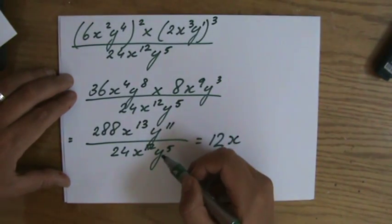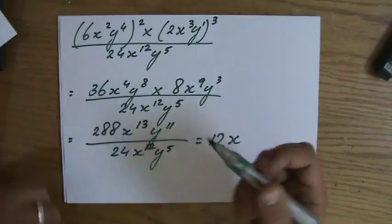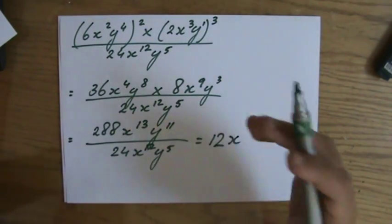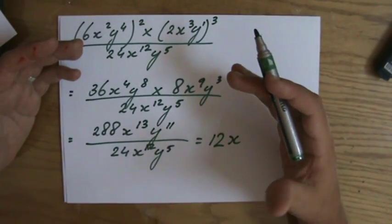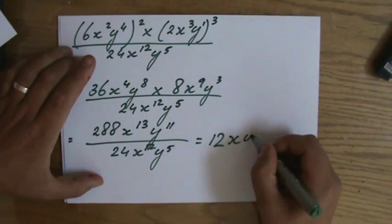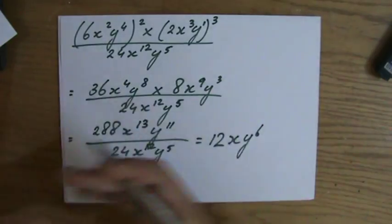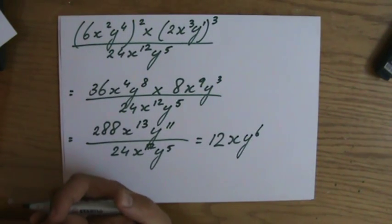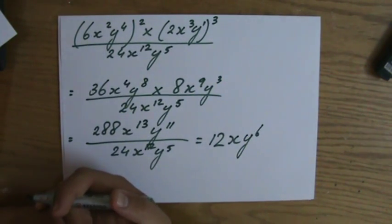And 11 to the power of 5 divided by 11 to... Sorry. Now I'm getting confused. Y to the power of 11. Thank you John. Over y to the power of 5. 11 minus 5. Y to the power of 6. You see if you rush things, you start making stupid silly unnecessary mistakes.